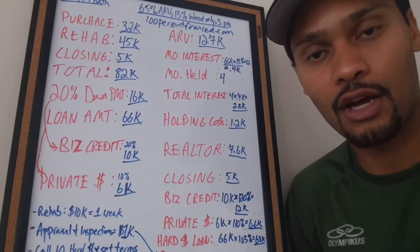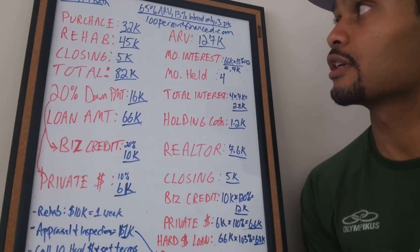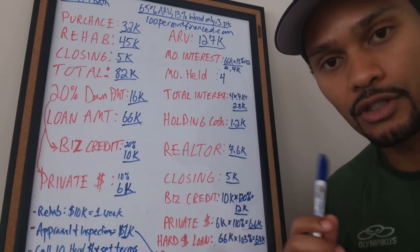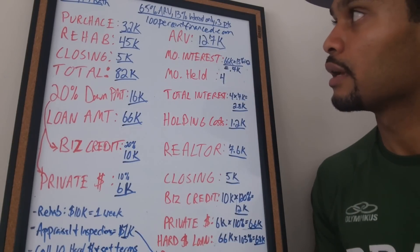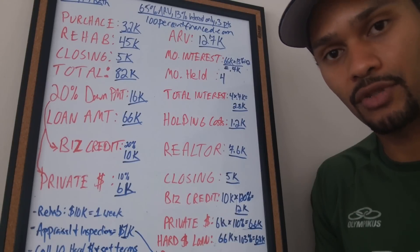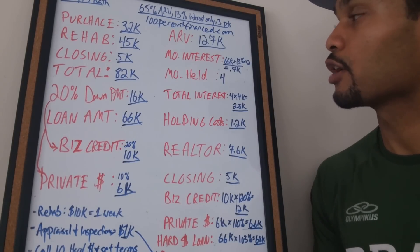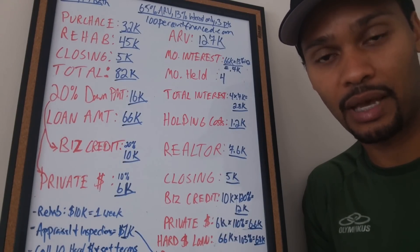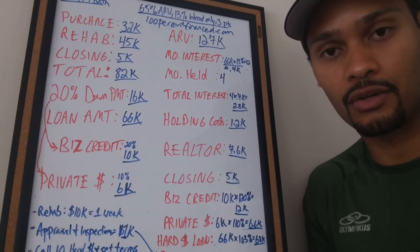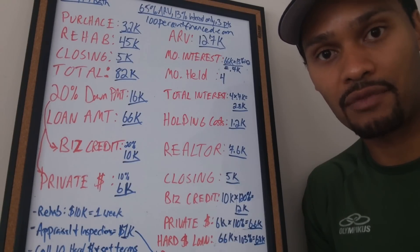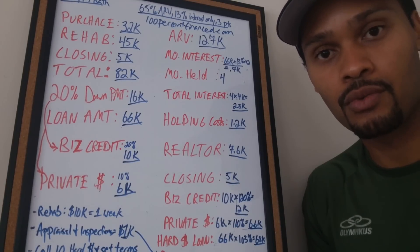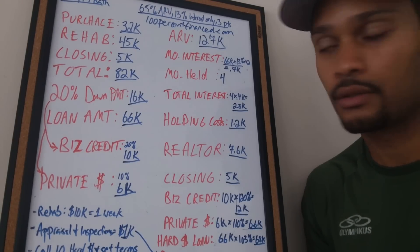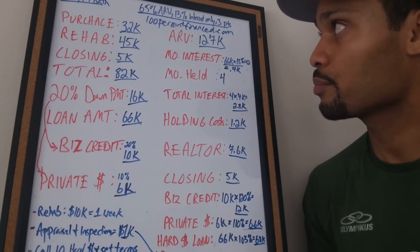So let's say you found a hard money lender with these terms: he'll give you 65% of the ARV — 65% of what the property will be worth. His terms are 13% interest only. Most hard money lenders give you interest-only loans so you're not paying principal, and normally they want their principal paid off within a year. They might say you have to pay a minimum holding period of interest — six months, a year, or 13 months — before you sell or refinance.